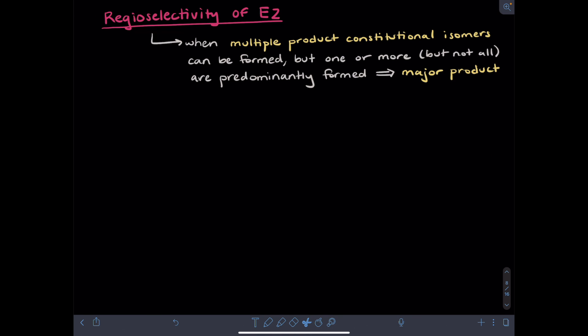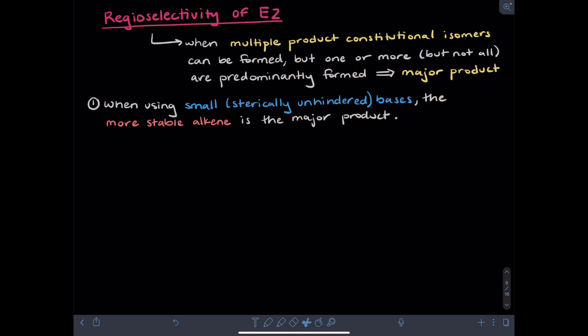I now want to discuss regioselectivity for E2 reactions. Regioselectivity indicates that your reaction could have multiple constitutional isomers of product formed, but if a reaction is regioselective, one or more — but not all — of these products are the predominant product, also known as the major product. What's observed is that when a small base is used — one that is not sterically hindered — the more stable alkene is the major product. This is called the Zaitsev product, after the discoverer of this regioselectivity.